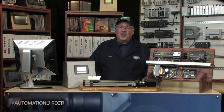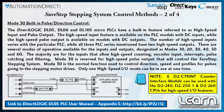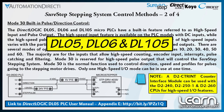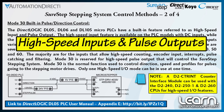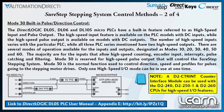Some of the AutomationDirect DirectLogic PLCs, such as the DL05, DL06, and DL105 families, have built into them a high speed input and pulse output feature. Keep in mind that the high speed input feature is available on PLC models with DC inputs, while the high speed pulse output is available on models with DC outputs.